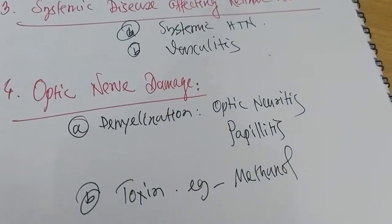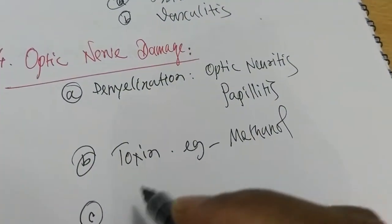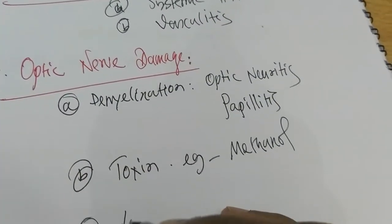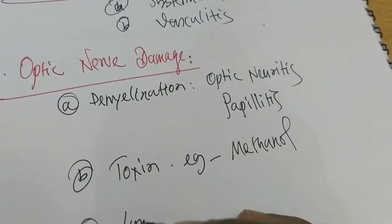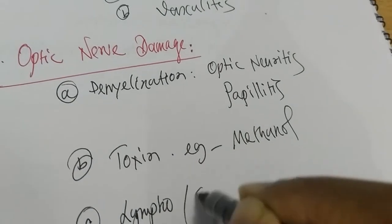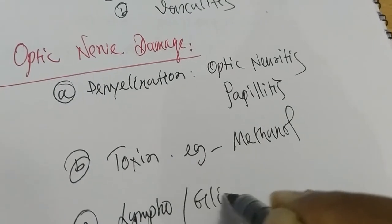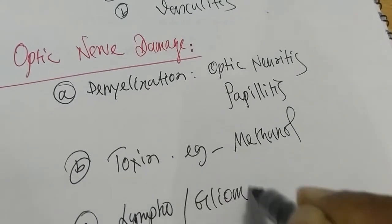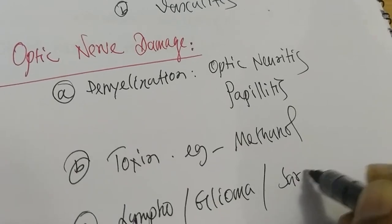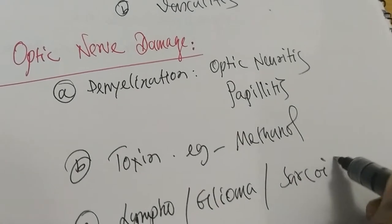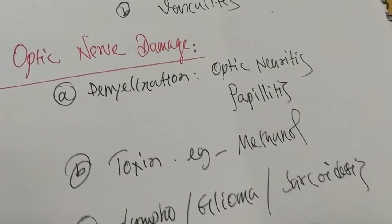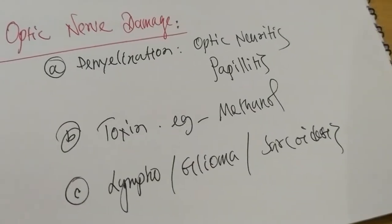Additionally, sometimes lymphoma, glaucoma, or sarcoidosis may also cause optic disc swelling.